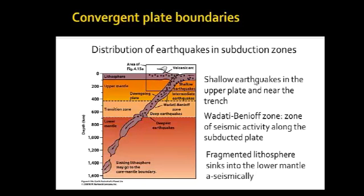Shallow earthquakes occur in the upper plate and near the trench. Then we have what we call the Wadati-Benioff zone, which is the interface — or close to the interface — between the down-going slab and the surrounding overlying asthenospheric mantle. Essentially, we have seismic activity along the subducting plate, within the subducting plate, and close to the interface.